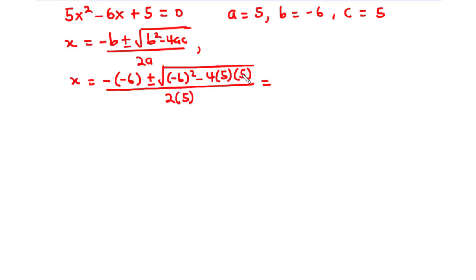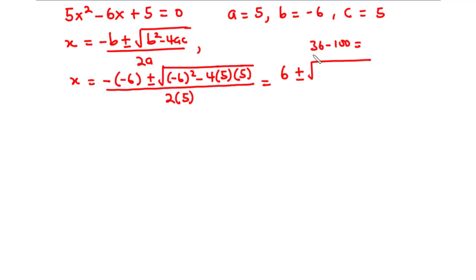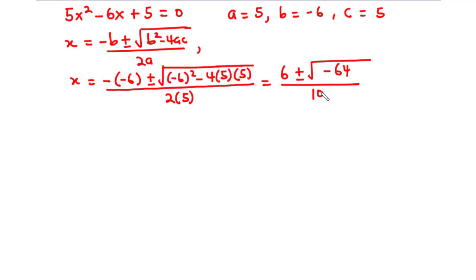This becomes 6 plus or minus the square root of negative 6 squared, which is 36, minus 4 times 5 times 5, which is 100. So 36 minus 100 is negative 64. We have the square root of negative 64, all divided by 10.